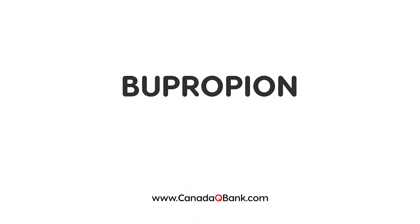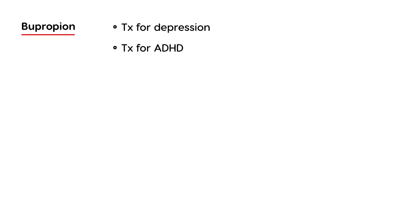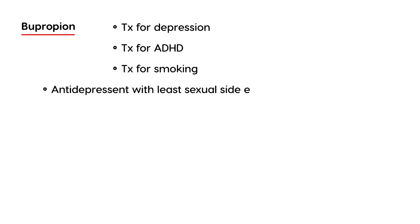In this video I'm going to talk about a medication called bupropion. Bupropion is used for several different things: it's a treatment for depression, a treatment for ADHD (attention deficit hyperactivity disorder), and a treatment for smoking. It's also notable as the antidepressant with the least sexual side effects, and one of its side effects is seizures. I'll use four clinical vignettes to cover all of these points.